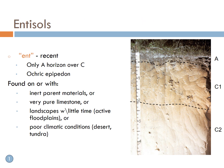Let's go over each soil order in greater detail. Entisols are most recently formed — ENT for recent. They generally only have an A horizon over a series of C horizons and typically have an ocric epipedon at the surface, which is a light-colored surface horizon. These are found on inert parent materials, very pure limestone, or landscapes that have had very little time to develop, such as active floodplains where there is constant redeposition before soil formation can occur, or poor climatic conditions like the desert or tundra where there's not enough water to move things through the soil profile.